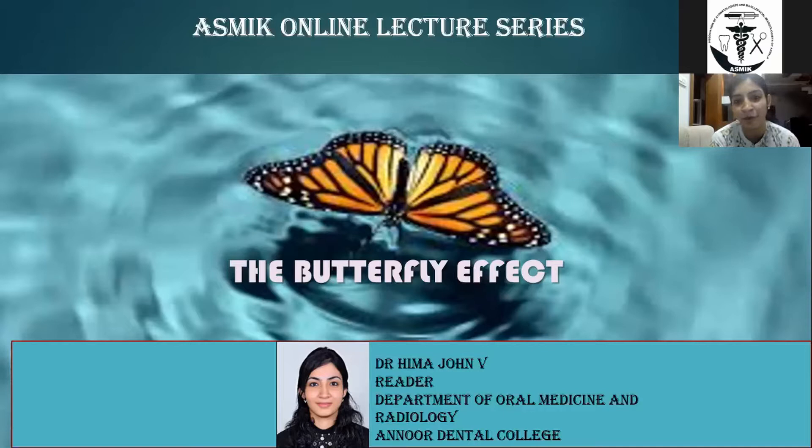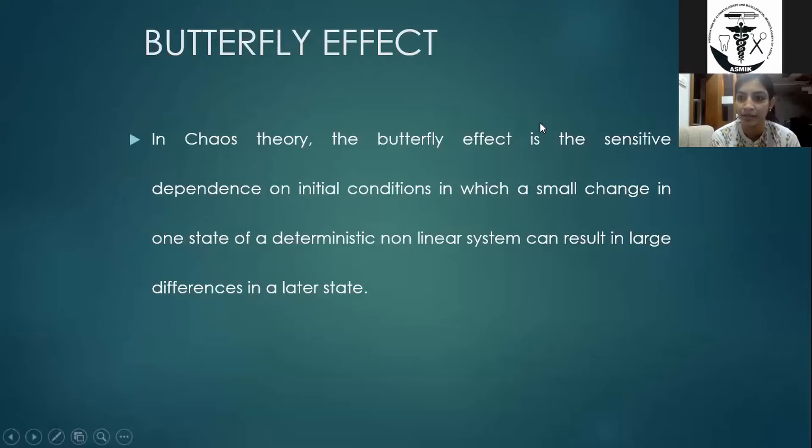Today my topic is the Butterfly Effect — it's a small, simple topic with a fancy name. In chaos theory, they say that something as insignificant as the flapping of a butterfly's wing can eventually cause a tornado. That is what the butterfly effect means.